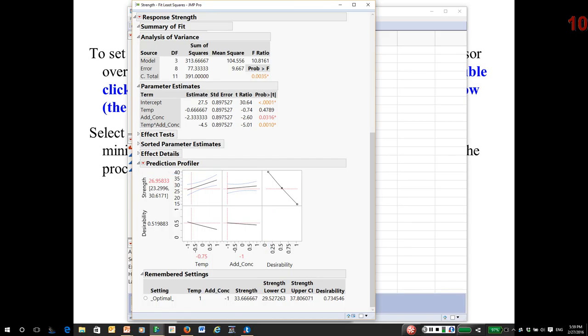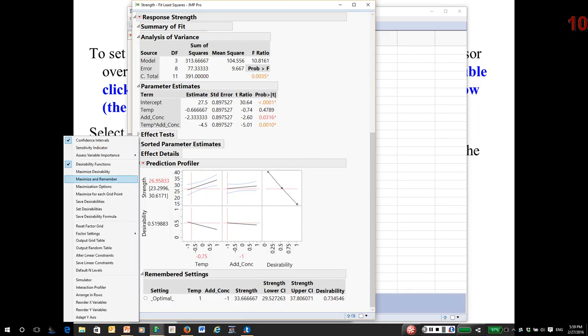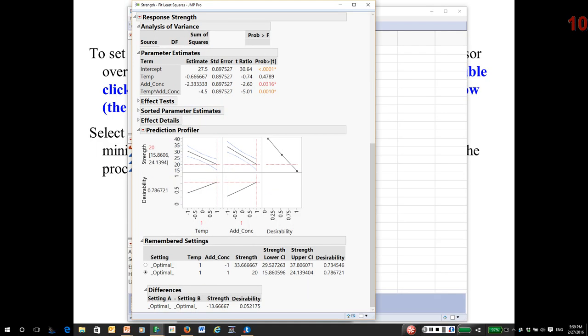So again, I go and I click, maximize and remember, JMP comes back and said, if you want the lowest strength, run at high temp and high additive concentration.